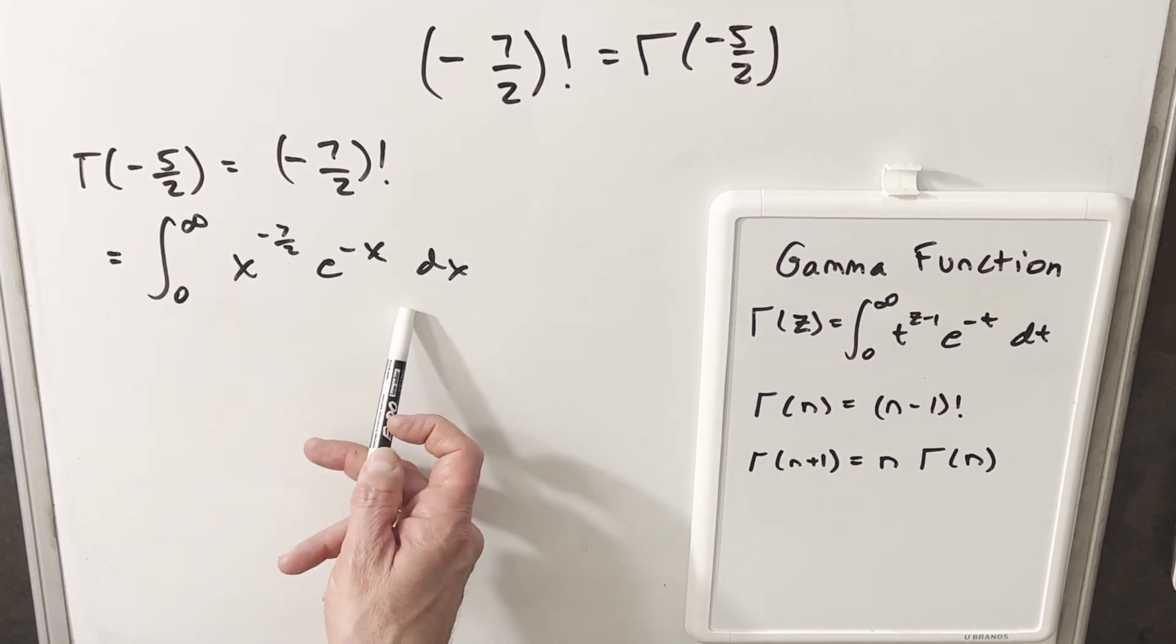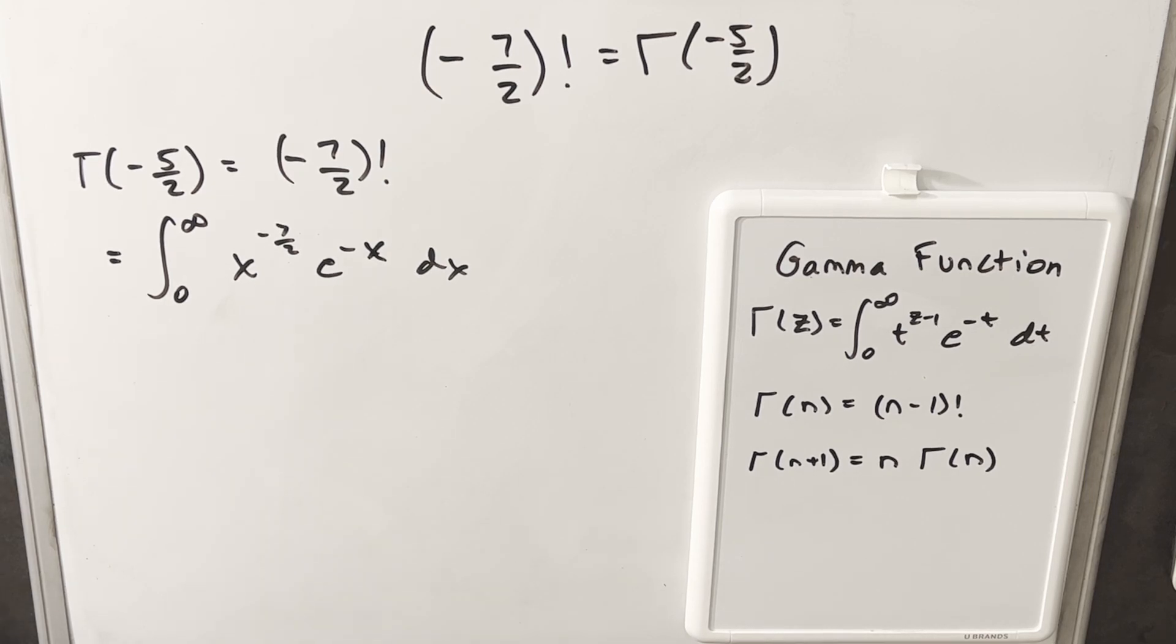So here's our integral that we could use in order to find our value for gamma of minus five halves, but what I want to do is something else instead. I think in many cases with the gamma function, it's easier to just find the value in terms of some other value that we previously found rather than doing an integral every time.